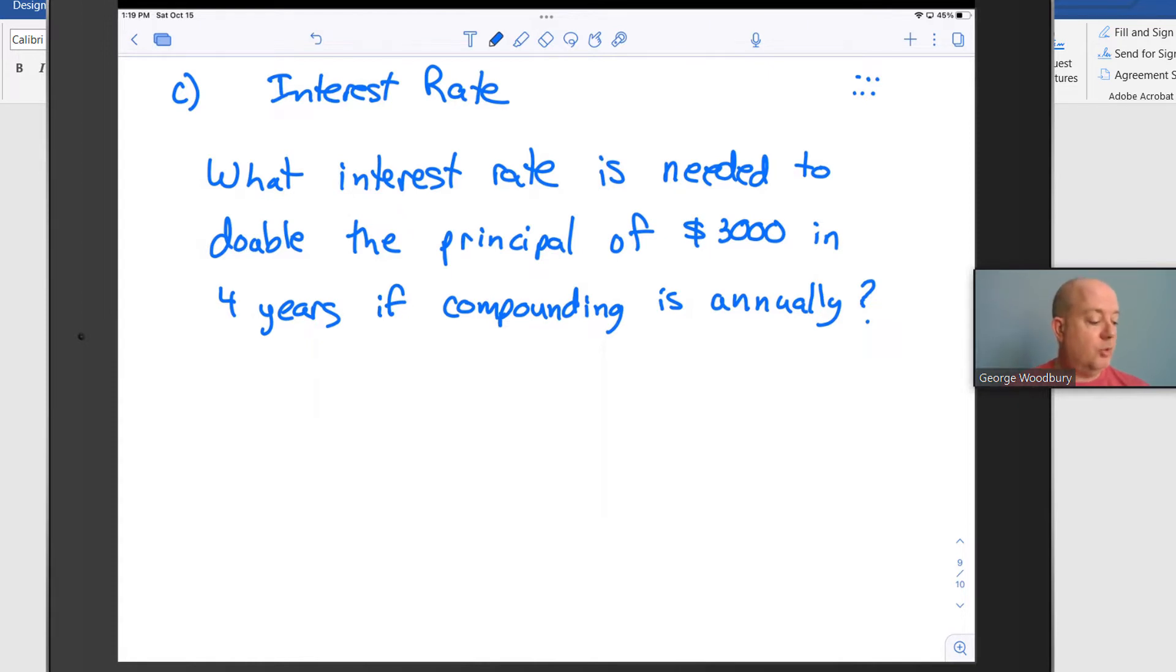I'm going to copy the formula down on the right-hand side: A equals P times the quantity 1 plus r divided by n, all raised to the nt power. Like I did in the last video,